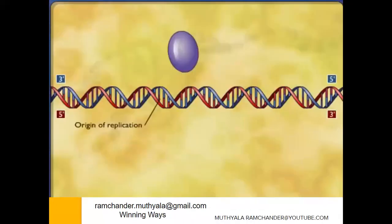First, let's discuss about the DNA structure. DNA stands for deoxyribose nucleic acid. It is in a double helical structure. It shows major grooves and minor grooves according to the Watson and Crick DNA model. Between the two long polynucleotide chains, hydrogen bonds are present between the nitrogenous bases. Between thymine and adenine, two hydrogen bonds are present, and between guanine and cytosine, three hydrogen bonds are present.